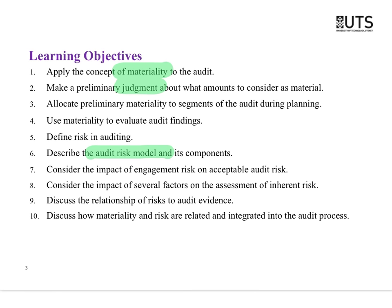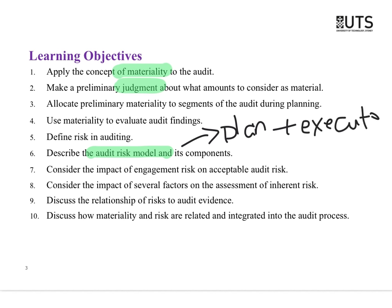We're going to look at the audit risk model because it's actually used to help us plan the rest of the audit — it helps us plan and execute our audit strategy. We're going back to inherent risk, which we've already looked at. We're going to look at how risk and evidence are related, and how materiality, risk, and evidence are related as well.